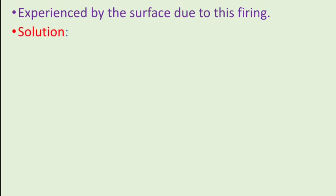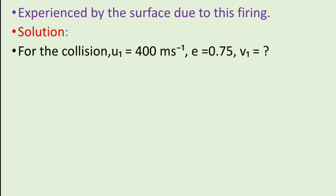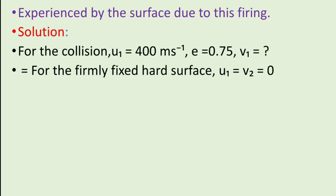Solution. For the collision, U1 is equal to 400 meter per second, E is equal to 0.75, and V1 is to be calculated. For the firmly fixed hard surface, U1 is equal to V2 which is equal to 0.